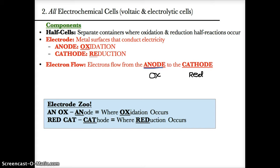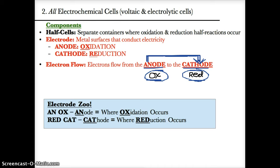Based on 'anox and a red cat,' electrons flow from the anode to the cathode — meaning they flow from wherever a species is oxidized to wherever a species is reduced. Using the oil rig rule, whatever is oxidized loses electrons, and whatever is reduced gains electrons.